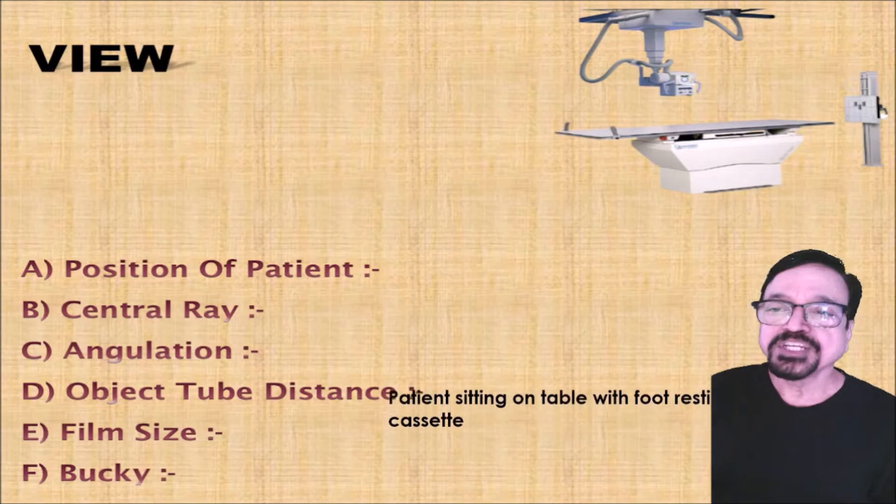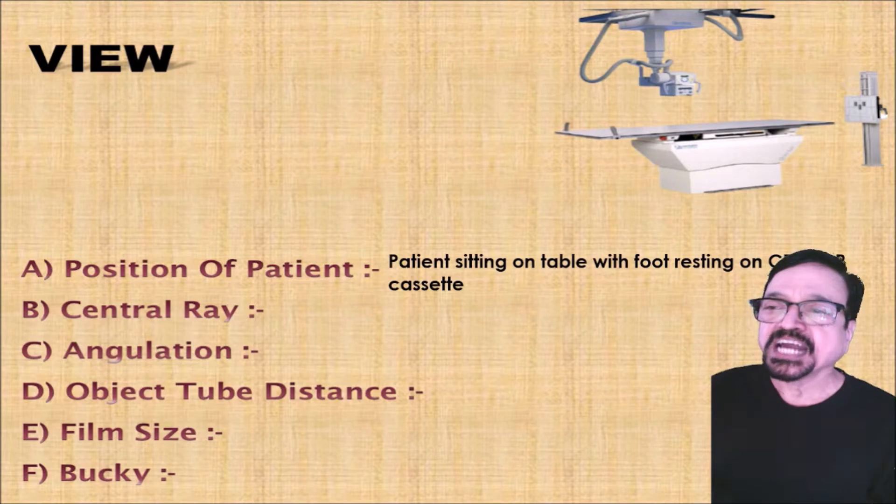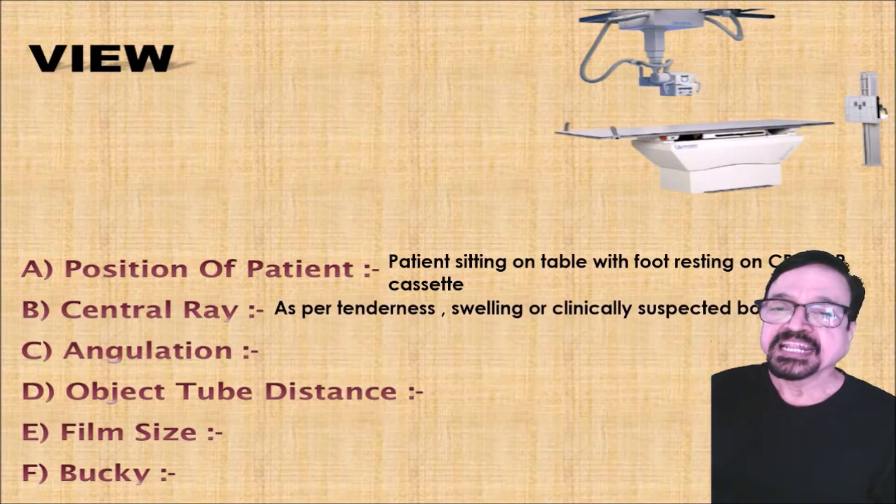Go to the first position, that is foot AP view. Position of the patient is sitting on the table with foot resting on CR or DR, that depends on the technique you are using. Then the central ray is as per tenderness, swelling, or clinically suspected bone.